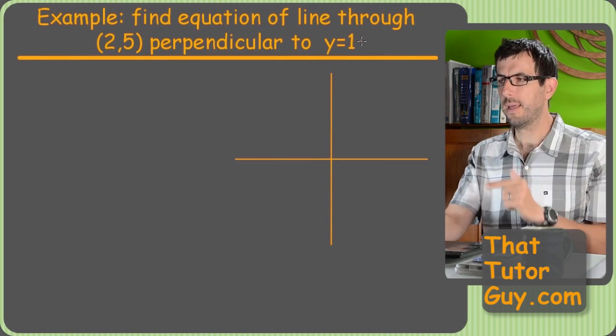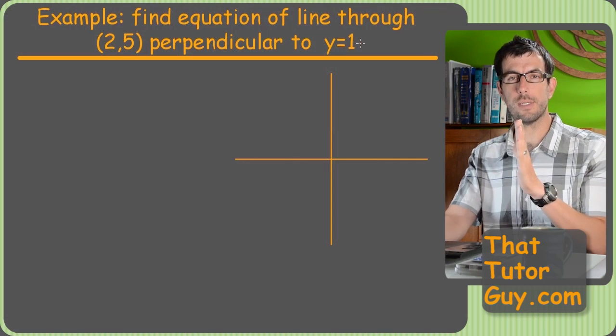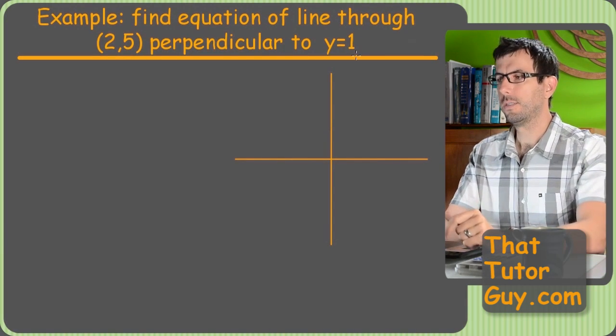Well, whenever one of the letters is missing, that should be your tip-off that, hey, this must be one of those special lines, either horizontal or vertical.